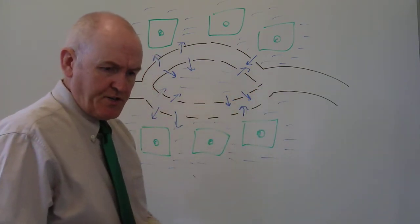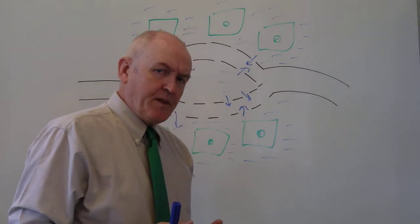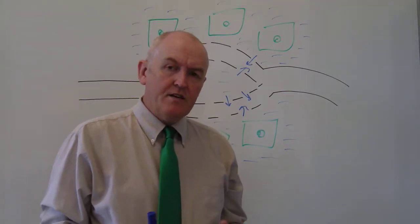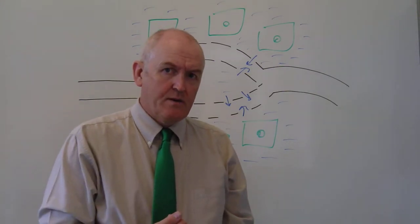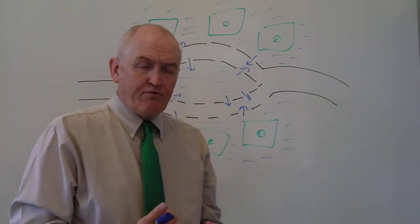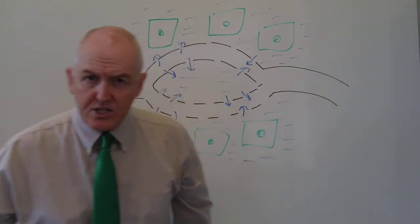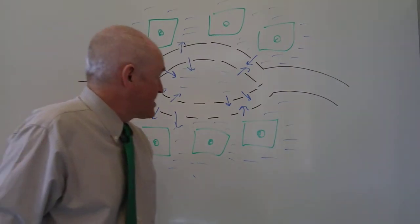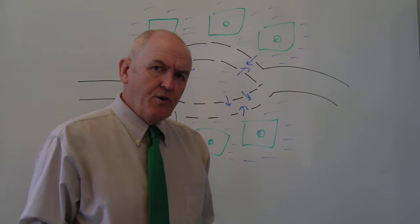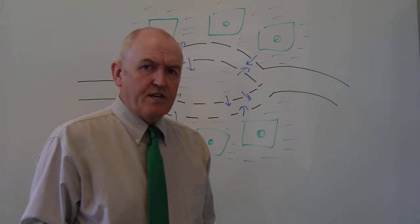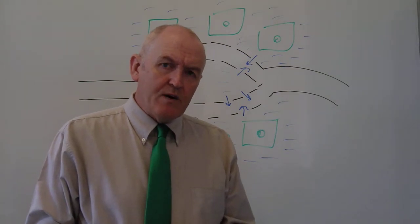In hemorrhage, whole blood is lost - red cells are lost, plasma water is lost, plasma proteins are lost - it's all lost. Hemorrhage causes blood to be lost from the intravascular compartment, reducing the volume of blood there. As a result, hypovolemia will start to develop.